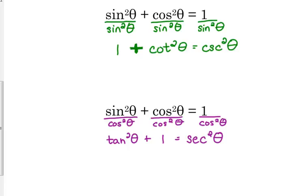We're going to end up using these identities to substitute. For example, if I see tangent squared of theta plus one in my equation, I'm going to replace it with secant squared of theta. It has to be squared in order to replace it — it can just be tangent of theta plus one, and I can't do anything with that in regards to this identity.